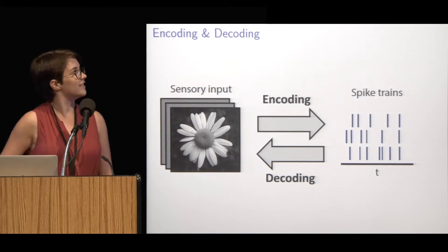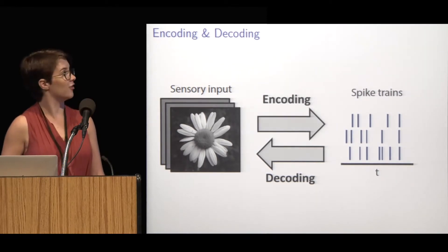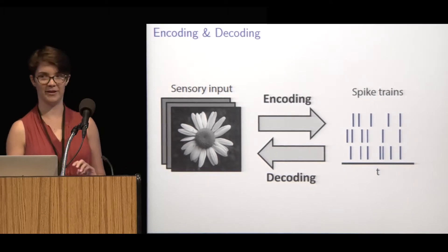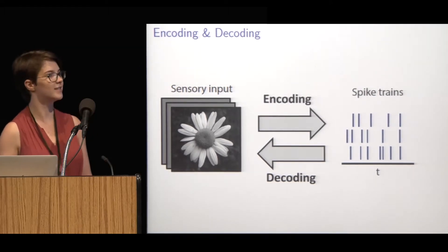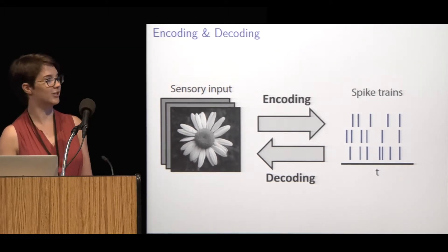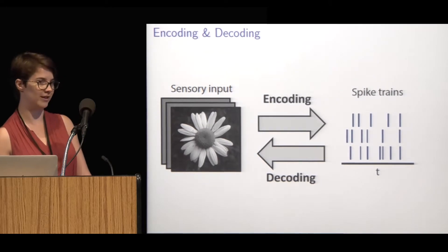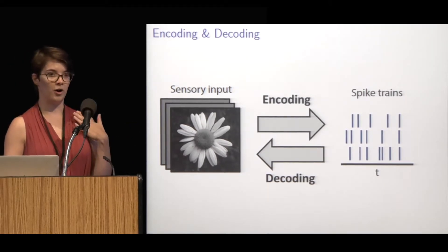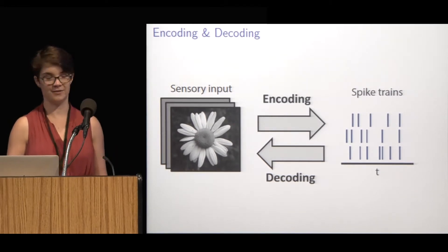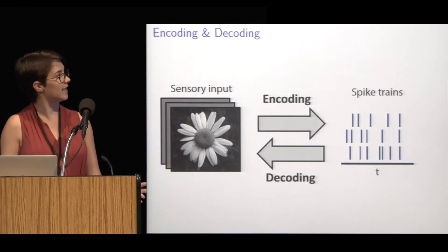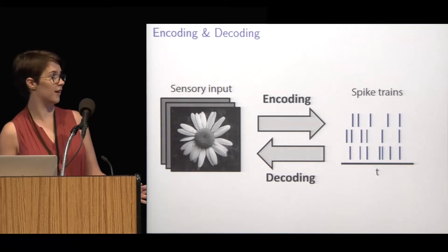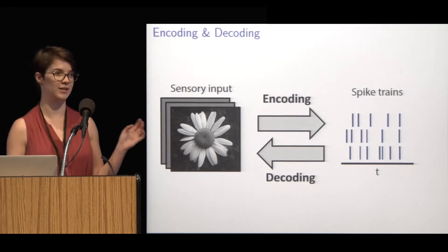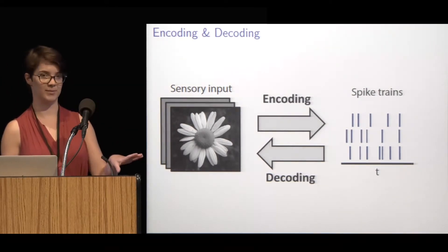A major field of research in neuroscience concerns neural coding and the relationship between sensory stimulus and the corresponding sensory neurons. We can think about this relationship in two ways. One is encoding, which is the process of, given the sensory input, predicting the neural responses. And the opposite that I'll focus on is decoding — the process of trying to reconstruct the sensory input given the spiking responses.